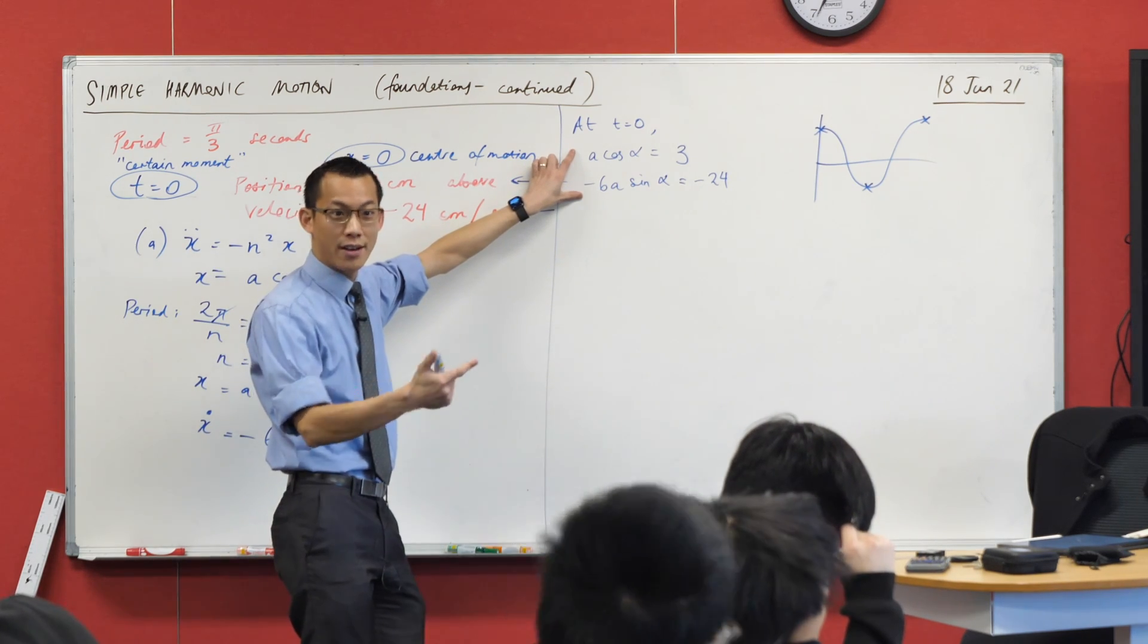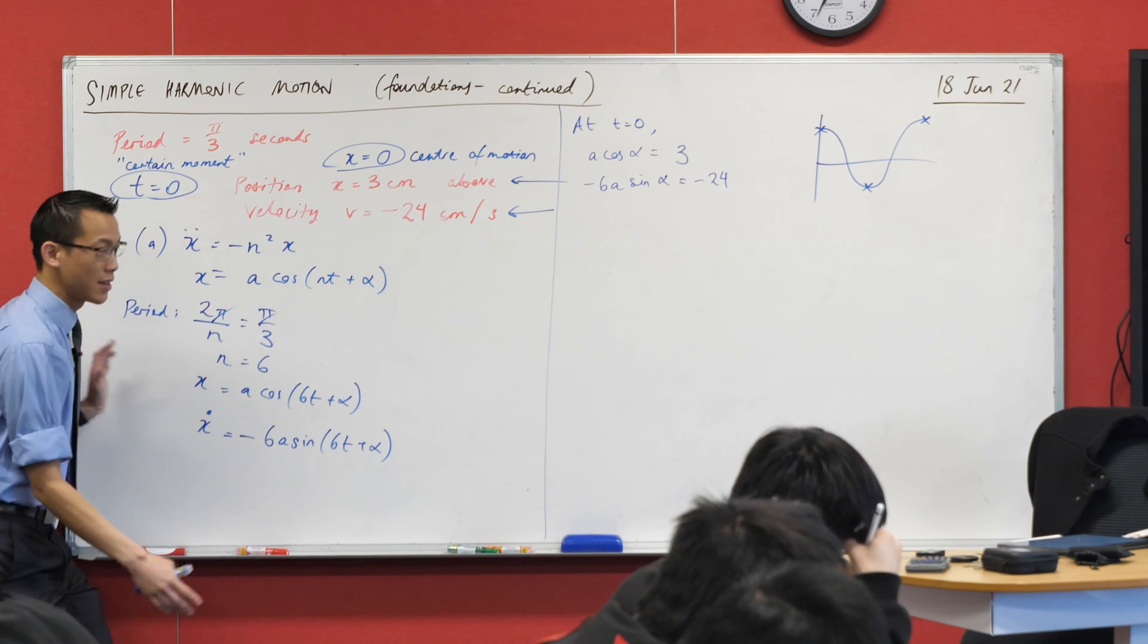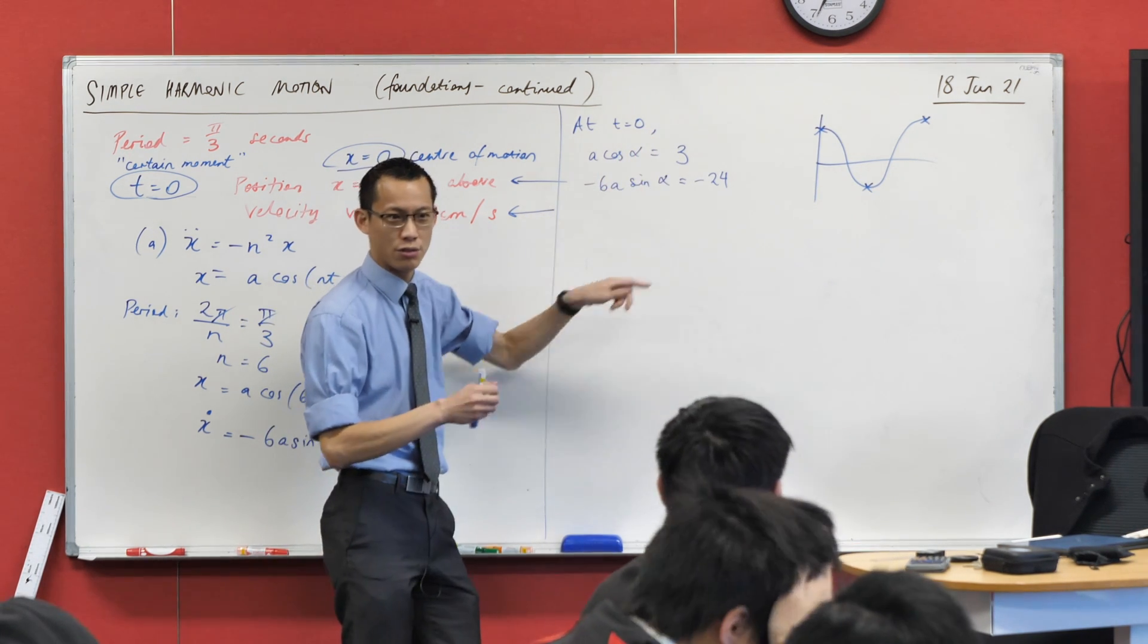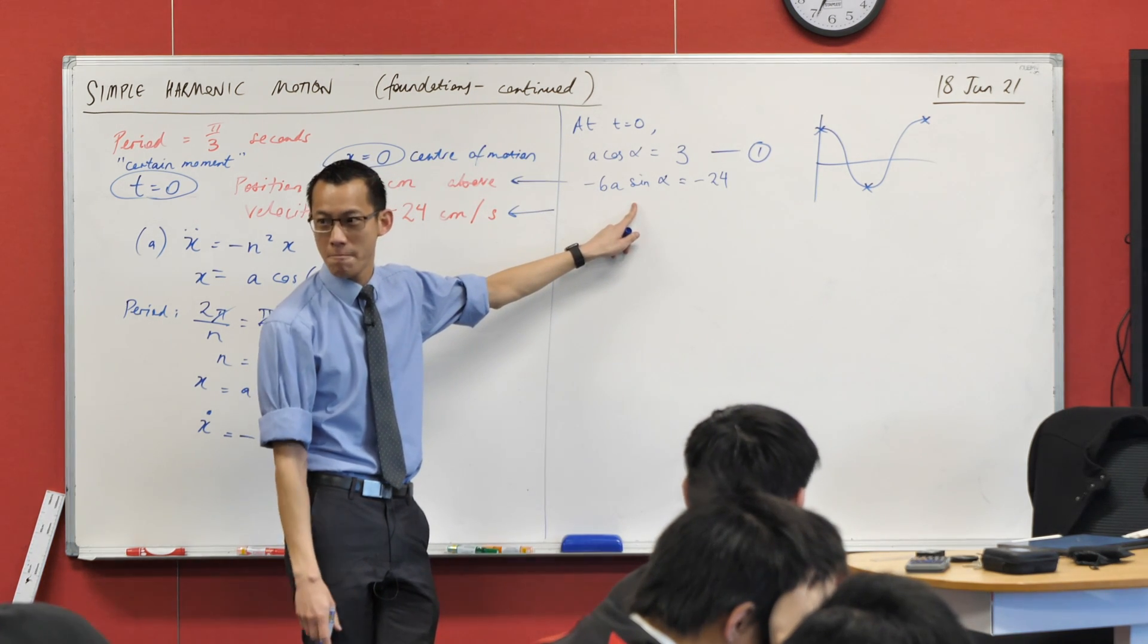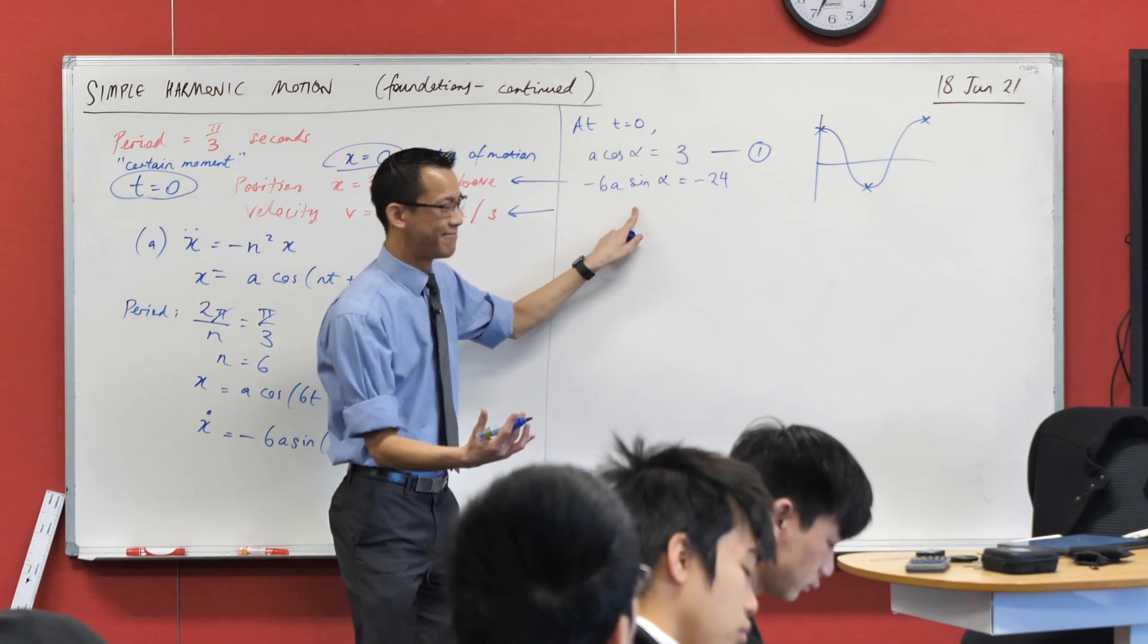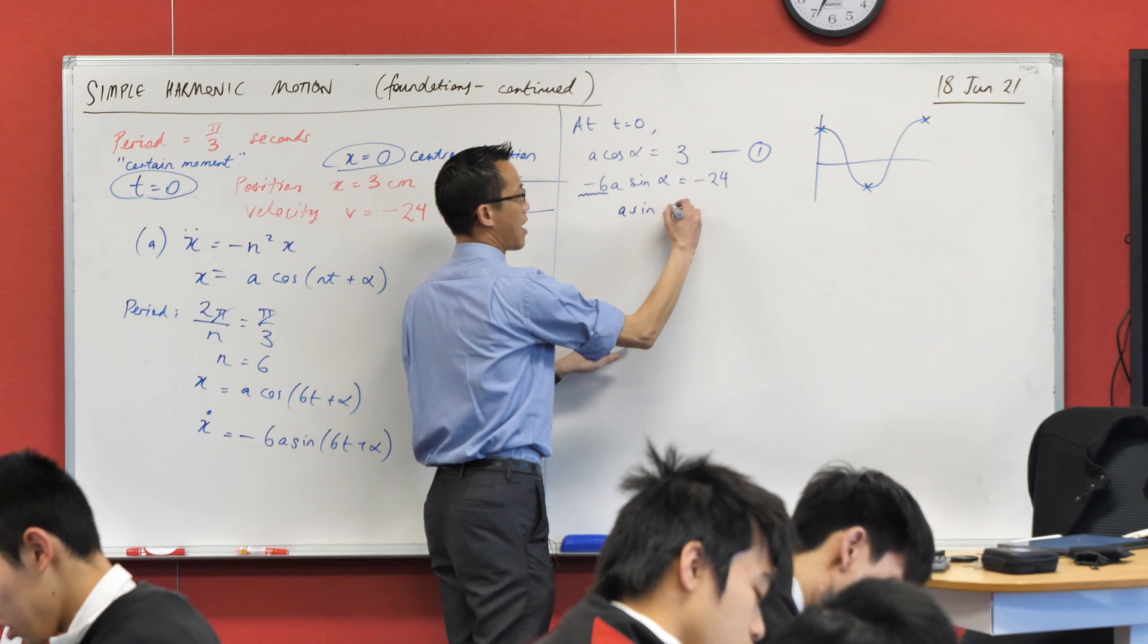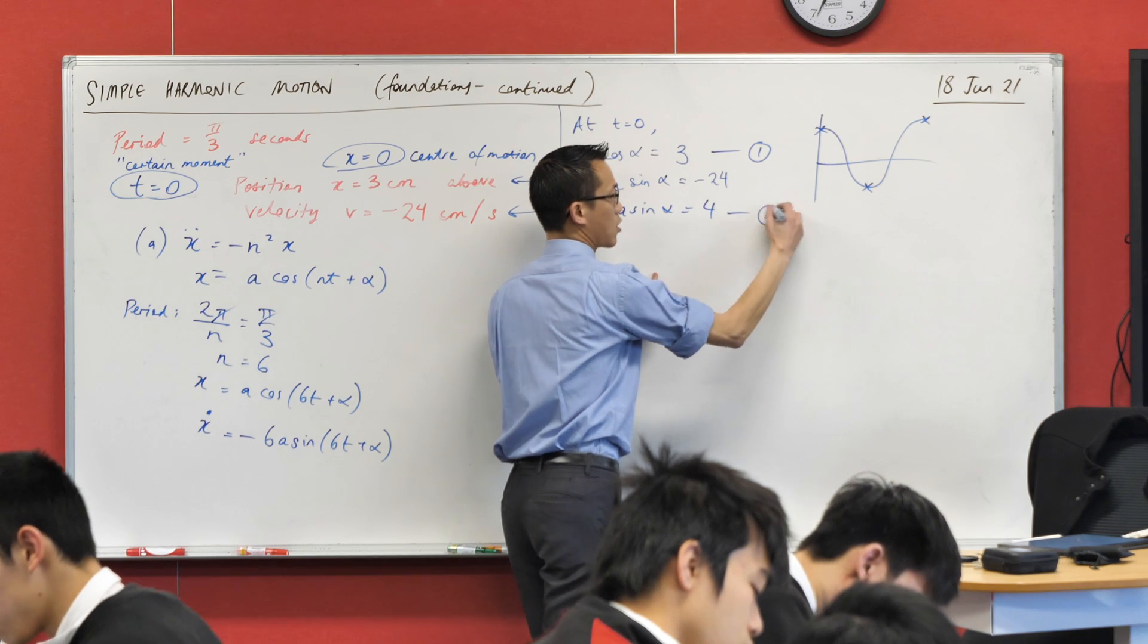I have two unknowns, a and alpha, and I have two equations. So this is just, I've turned all this simple harmonic motion business into something you could have done back in year 9. This is a simple simultaneous equation set up. I could do one more thing just to make it even lazier for me. Before I label these 1 and 2, what would you like me to do to make it easy to work with? I can simplify. I'm going to divide both sides through by negative 6. So that gives me a sine alpha equals 4. I'm calling this one equation 2.